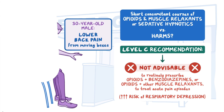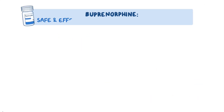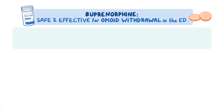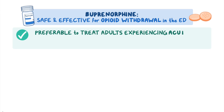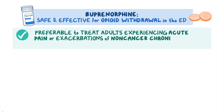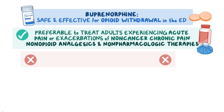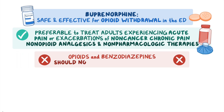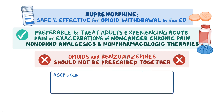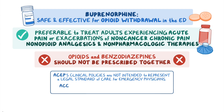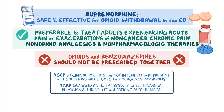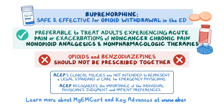Now let's do a quick recap. Buprenorphine is safe and effective for managing opioid withdrawal in the ED. It is preferable to treat adults experiencing acute pain or exacerbations of non-cancer chronic pain with non-opioid analgesics and non-pharmacologic therapies. Finally, opioids and benzodiazepines should not be prescribed together. ACEP's clinical policies are not intended to represent a legal standard of care for emergency physicians. ACEP recognizes the importance of individual physician judgment and patient preferences. Learn more about MyEMSERT and key advances at www.abem.org.